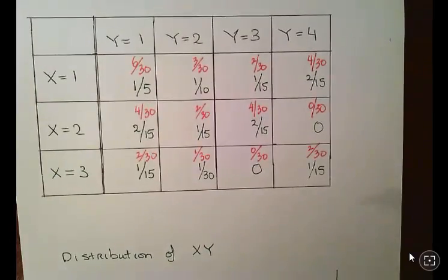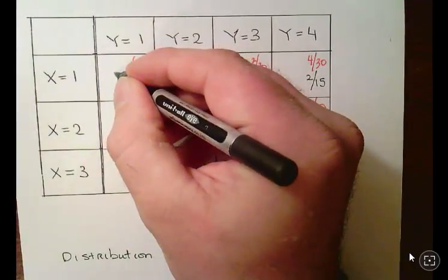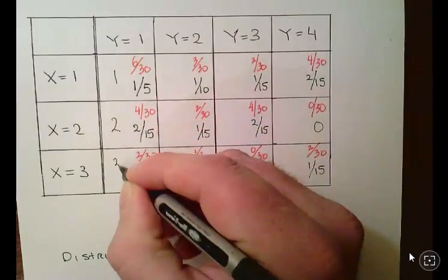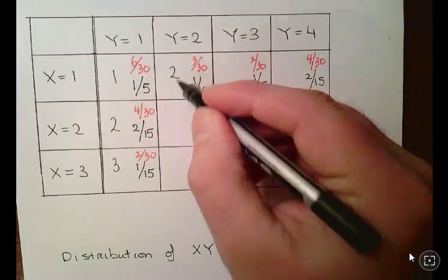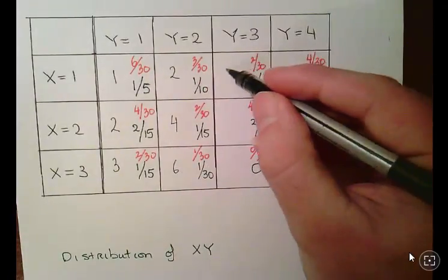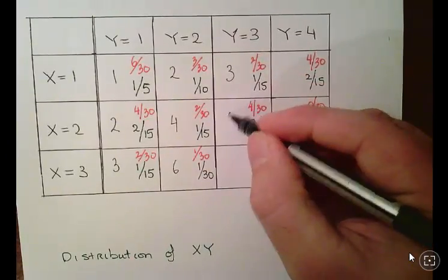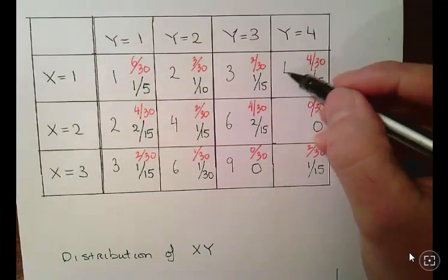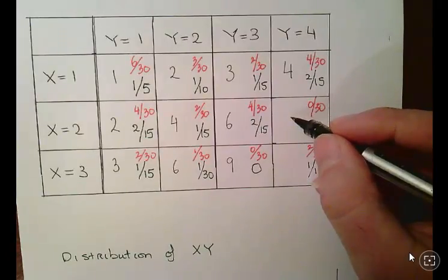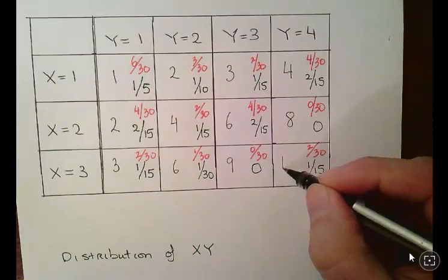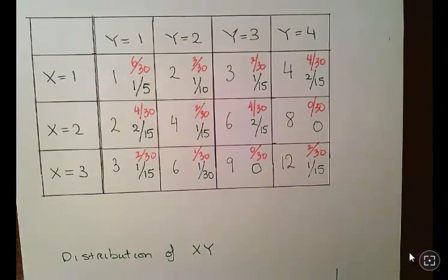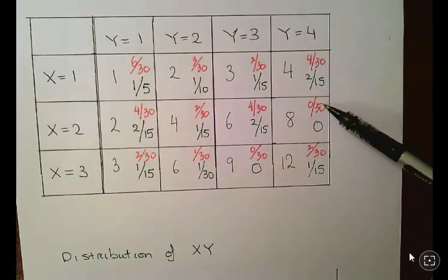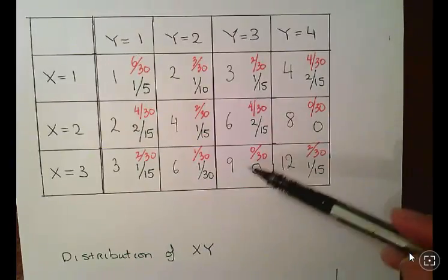What we are going to do here is multiply out X and Y. So we have: 1×1=1, 1×2=2, 1×3=3; 2×1=2, 2×2=4, 2×3=6; 3×1=3, 3×2=6, 3×3=9; and 4 gives 4, 8, and 12. As a remark, the probability of 8 is 0 — that's 0 over 30 — and the probability of 9 is 0 over 30. So we disregard 8 and 9.